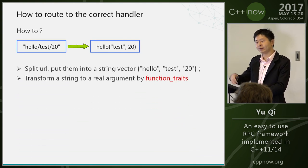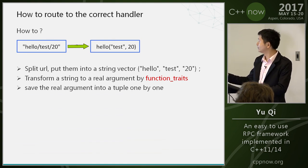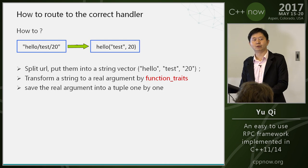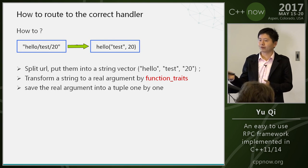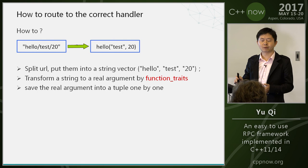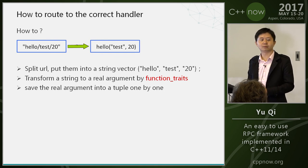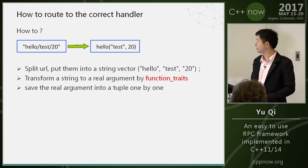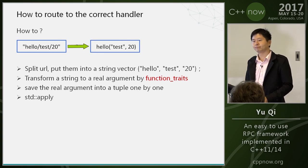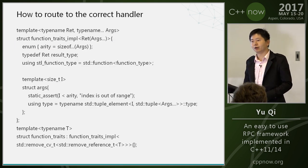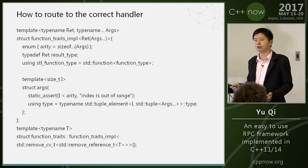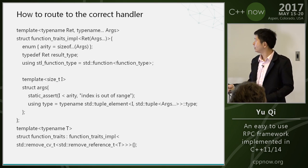First, I split the string into a string vector, then transform each string into a real argument. How to transform? Because you have saved the type information, you can use function traits to get the real argument type, then save it into a tuple. Let's look at the code — this is the function traits. It helps us to get the return type, argument types, and number of arguments.